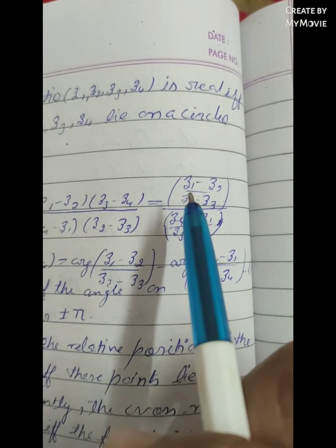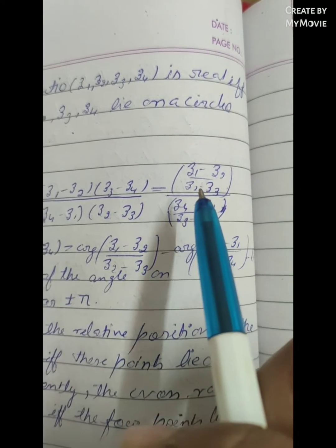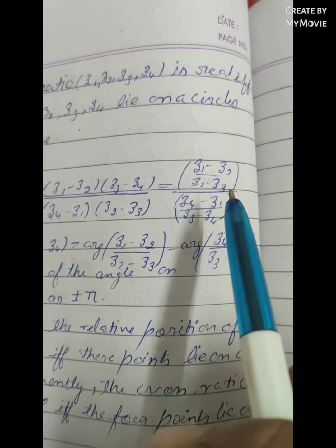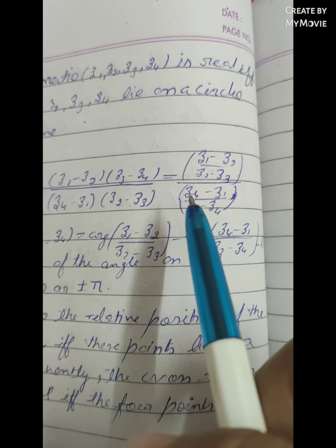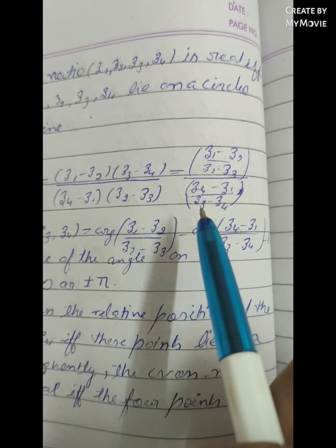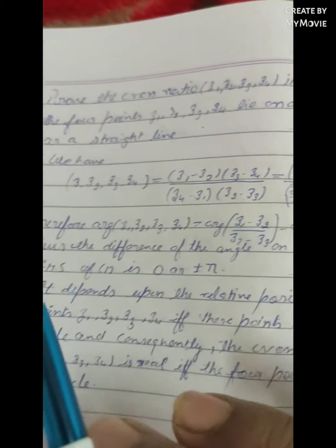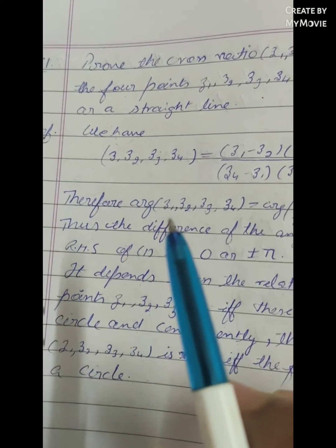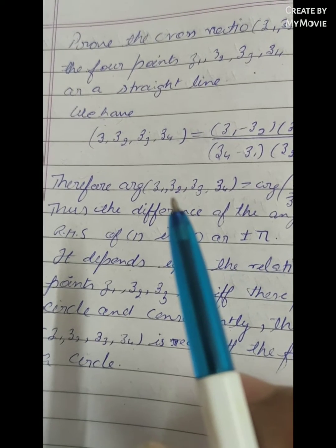(Z1 minus Z2 upon Z2 minus Z3) upon (Z4 minus Z1 upon Z3 minus Z4). Therefore the argument of Z1,